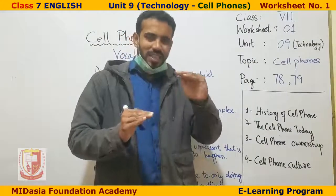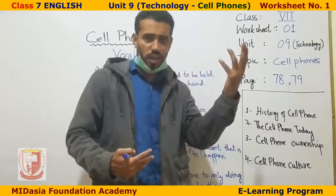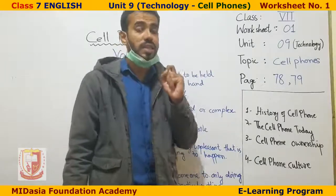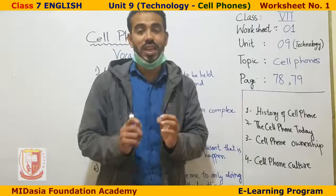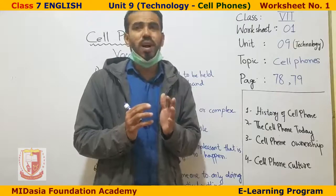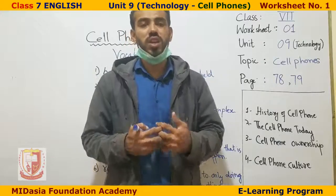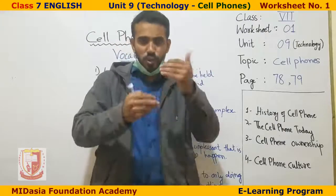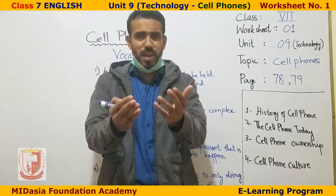Now it's time to understand the lesson. First, look at the history of cell phones. The important point is that the first cell phone was introduced in Sweden in 1956. A major disadvantage of that first cell phone was its weight — it weighed 40 kilograms. That was a big drawback. There is more in the text which you can read yourself — I want to keep some things interesting for you to discover.